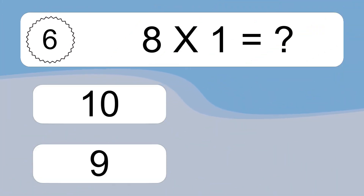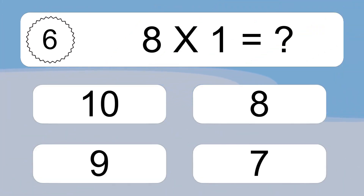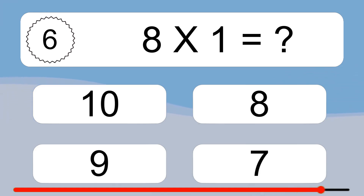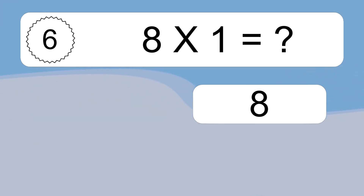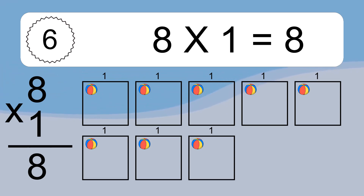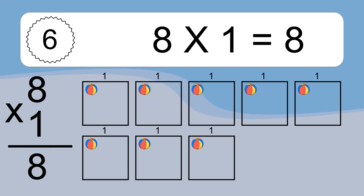8 times 1 equals what? 8 times 1 equals 8. We have 8 boxes, and each box has 1 colorful ball inside. If you count all the balls in all the boxes together, you will have 8 times 1 balls. This equals 8 balls.